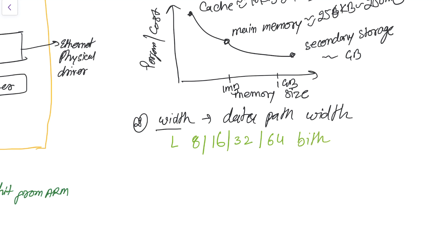Data pathways include 8-bit, 16-bit, 32-bit, and 64-bit. A larger data path means faster data transfer. In general, ARM microcontrollers are 32-bit wide, but this type of microcontroller can have memory that is only 16-bit wide.